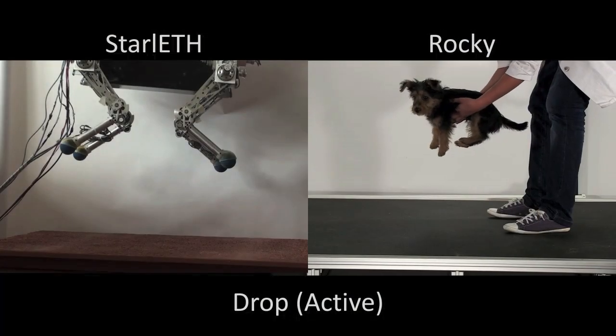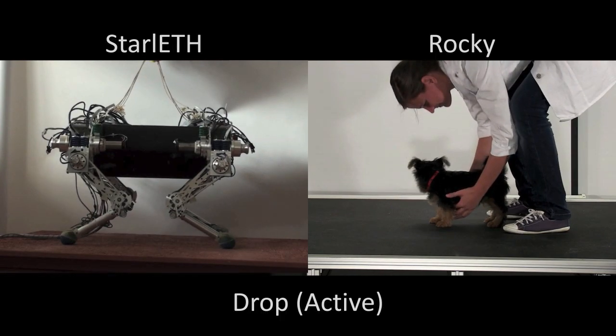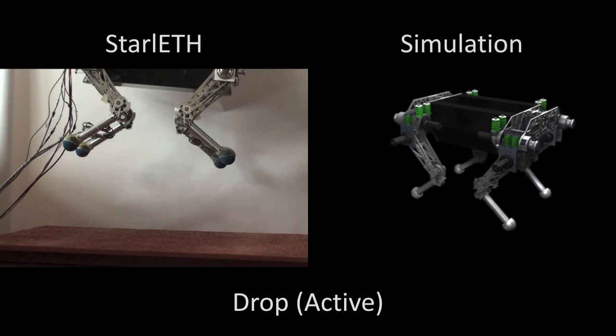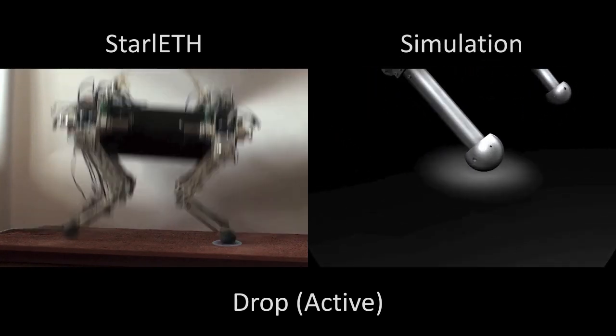To mitigate this bouncing, Starlet has to be controlled continuously throughout the whole drop. Let's have a look at this process in detail. First of all, we have to detect contact.